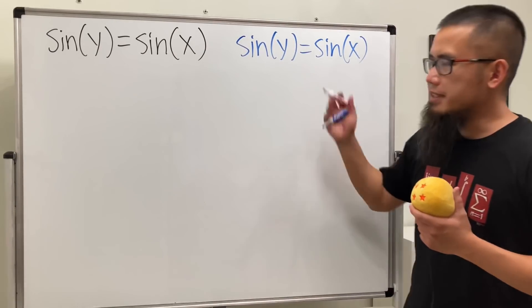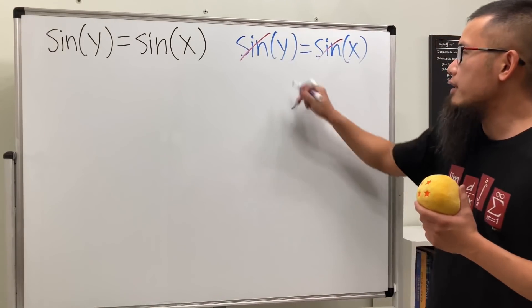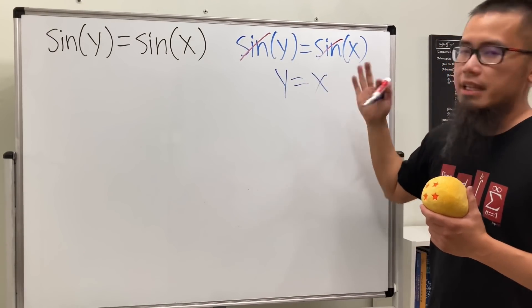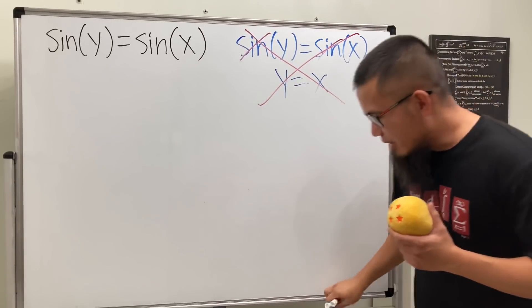I wanted to show you how to cancel the sine from this equation. You may think this is so easy - let's just cancel the sine and say y equals x. Yes, so easy, but so wrong. Don't do this. The reason is because sine is not injective.